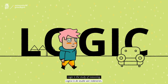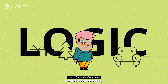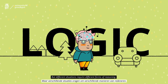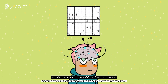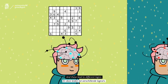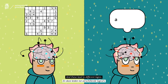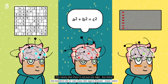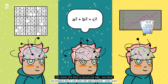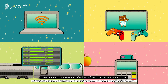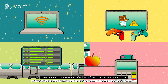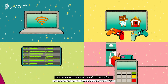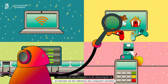Logic is the study of reasoning, an activity that we humans do every day. But different situations require different forms of reasoning, and these lead to different logics. This means that there is not just one logic, but many. This also applies when reasoning about the software systems that we all rely on, and when we use computers to do reasoning for us.